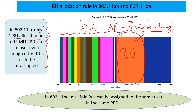So what does 11be or Wi-Fi 7 do about this? In 11be, we now allow a lot more flexibility in the scheduling by giving the AP the flexibility to assign more than one RU in the same PPDU.